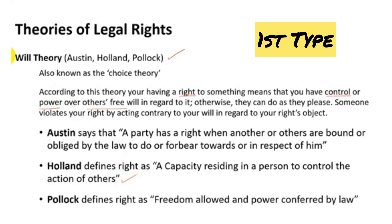That is basically known as will theory. While writing an answer for an exam, you can start with Holenka's definition: a capacity residing in a person to control the action of others. According to this theory, having the right to something means you have control over others' free will in regard to it. I have complete rights to control others' free will because I am the owner.